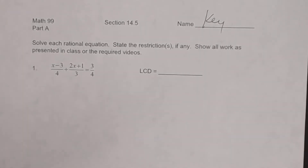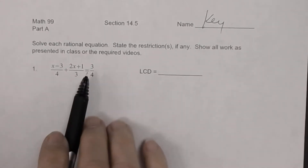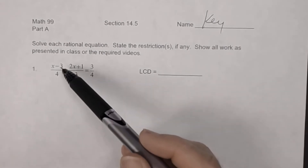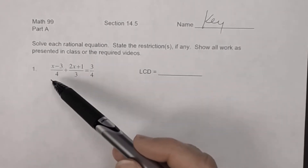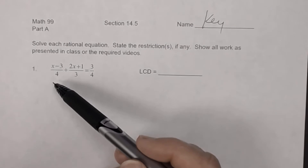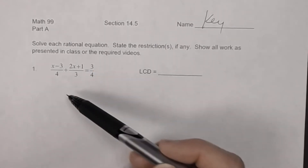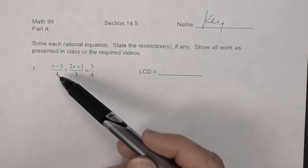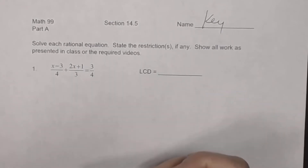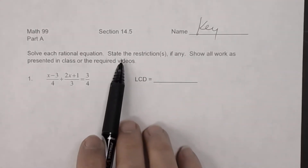This is a key to worksheet 14.5 part A, which is a section on solving rational equations. A rational equation is an equation that has a rational expression — think of it as a fraction. The variable doesn't always have to be in the numerator; it could be in the denominator as well, as you'll see in number two. The directions also say to state any restrictions.